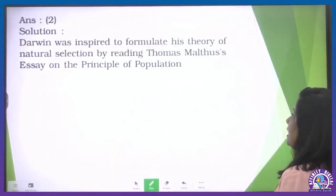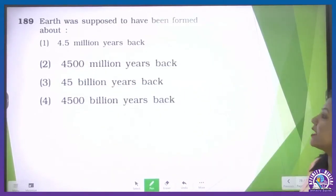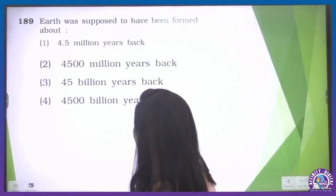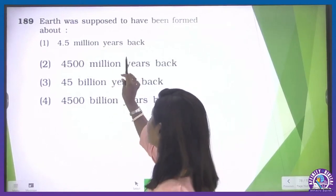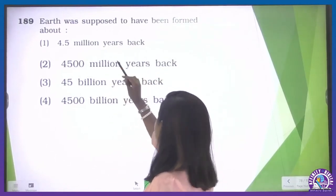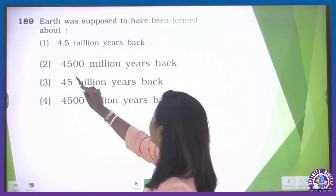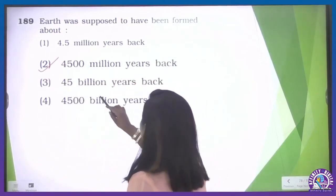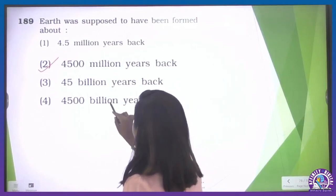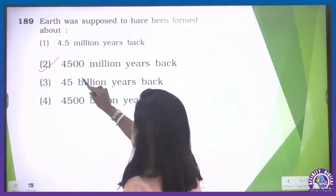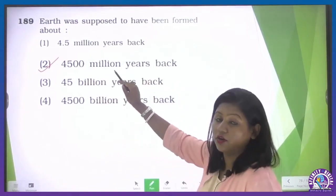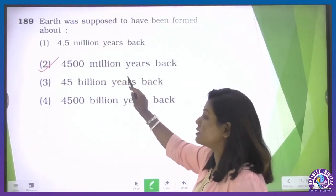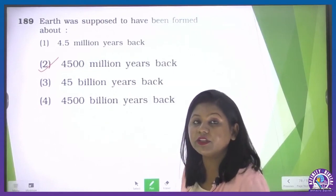Question number 189: Earth was supposed to have been formed about — 4.5 billion years ago is mentioned here as million years ago — which is incorrect. The correct NCERT statement is 4,500 million years ago. If converting to billion, it should be written as 4.5 billion years ago (4.5 BYA). So the correct option according to NCERT is 4,500 million years ago.